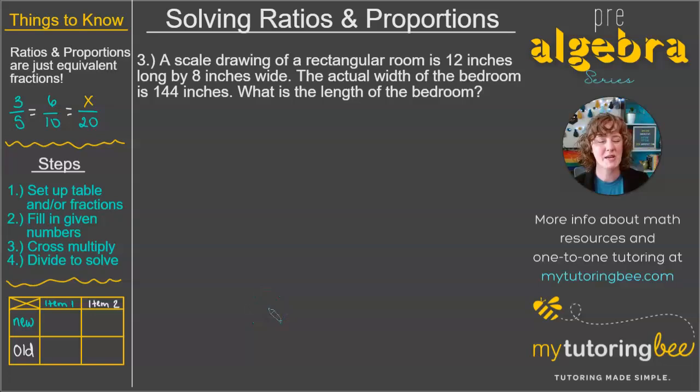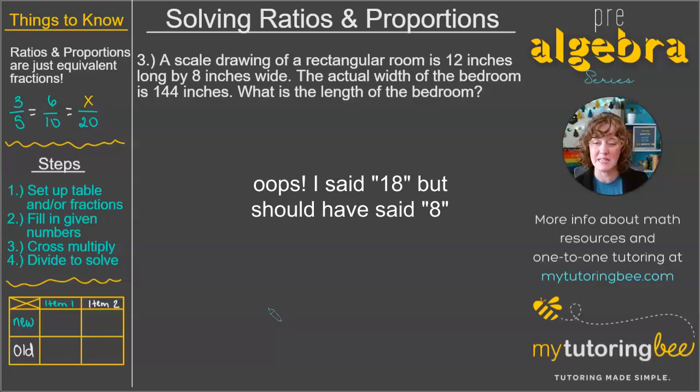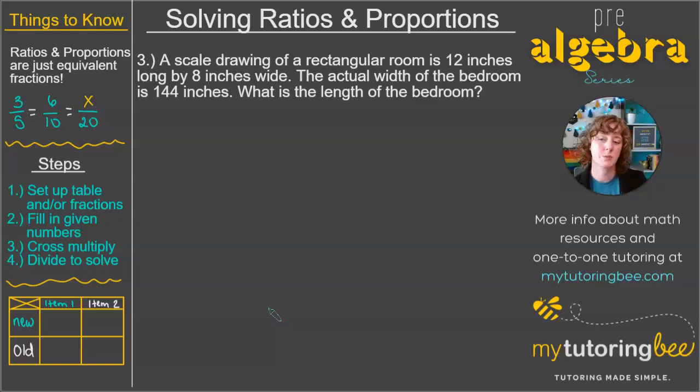Okay, we've got one more example here. Here we have a scale drawing of a rectangular room that is 12 inches long by 8 inches wide. The actual width of the bedroom is 144 inches. What is the length of the bedroom?